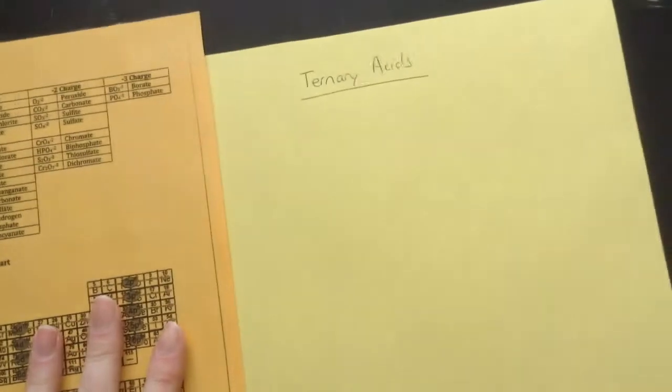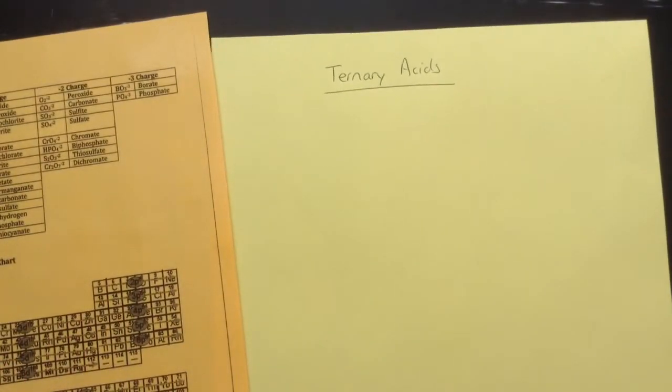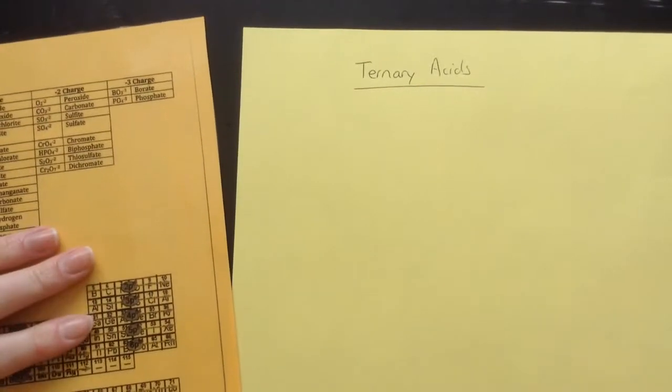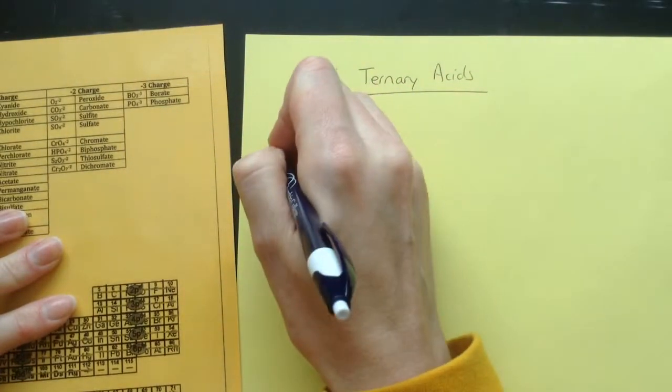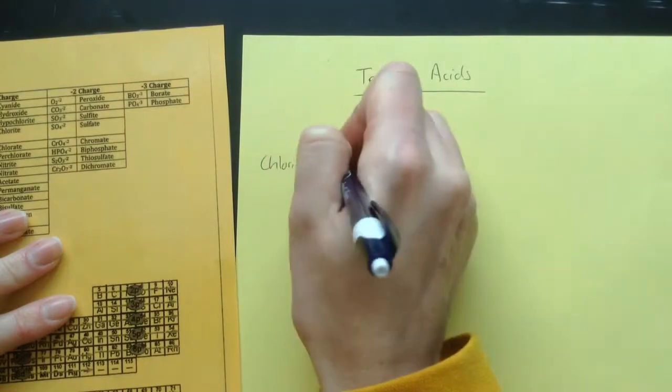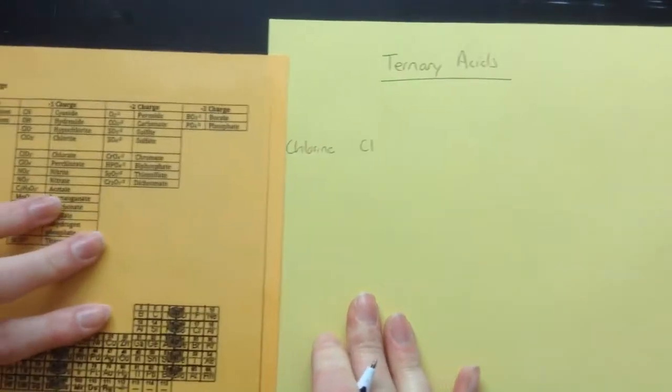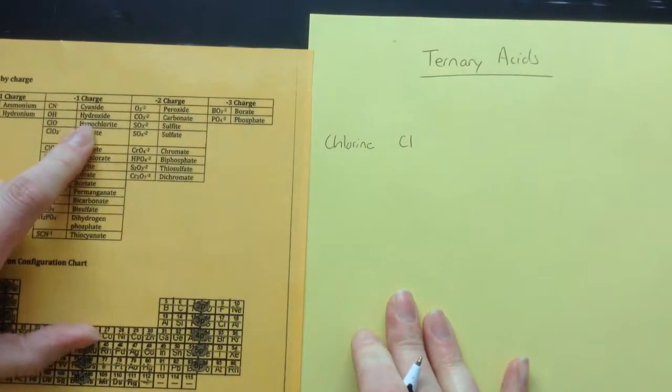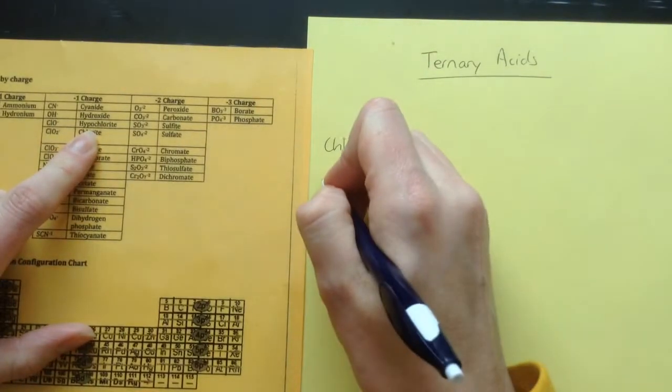Alright, so here's what we're going to do. We're going to look at a set of ternary acids and then kind of come to some conclusions based on that, and we're going to look at the ones that have chlorine in them. So chlorine by itself would just be Cl, and when chlorine combines with oxygen in a variety of ways we get a couple of different things.